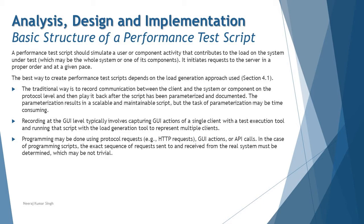Programming may be done using protocol requests such as HTTP requests, GUI actions, and API calls. In this case of a programming script, the exact sequence of requests sent to and received from the real system must be determined, which may not be trivial. We need to make sure what kind of communication to capture, plus what add-ons to consider in terms of HTTP requests and GUI actions a user can perform, and what APIs will be called must be established. The connection to these things plays a crucial role, and sometimes it might be difficult to have access to all that information a user needs in order to perform a transaction completely and successfully.